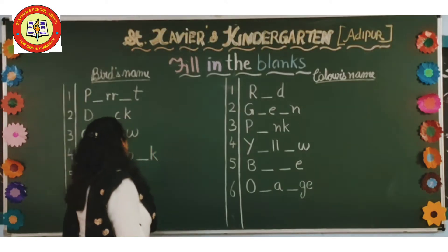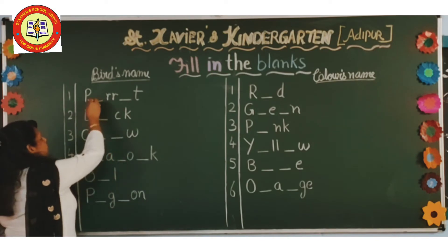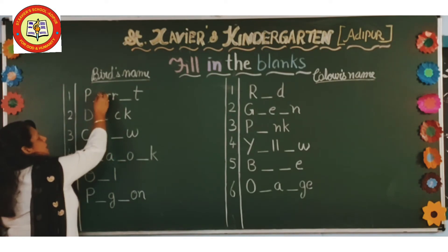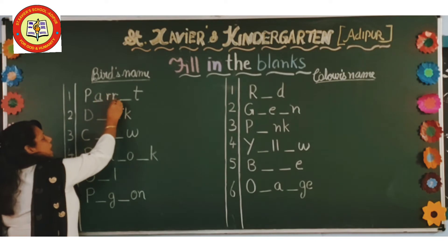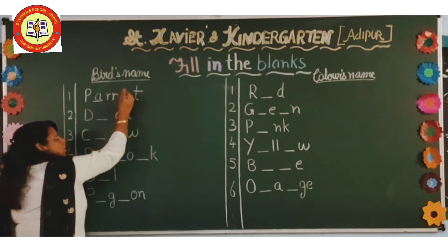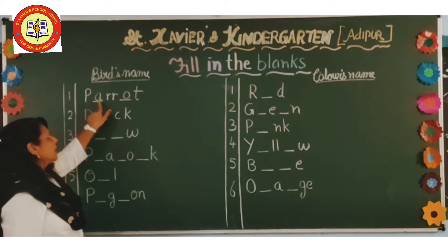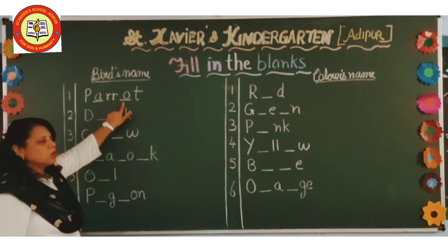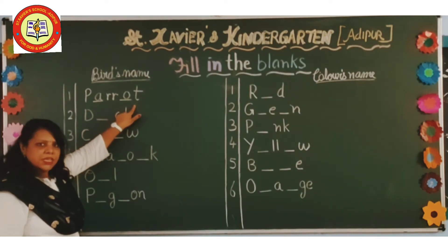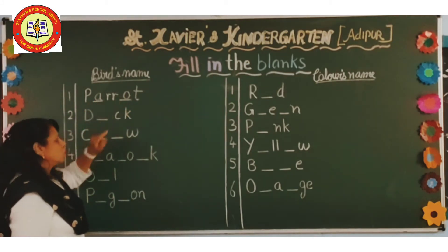So first one is parrot. P-A-R-R-O-T, parrot. So we have to fill here A and O.